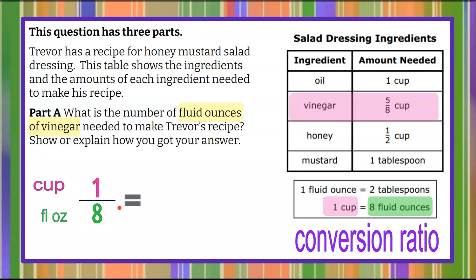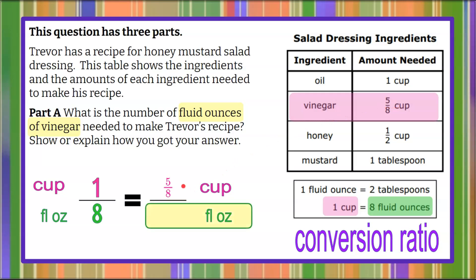We're going to write a proportion using this ratio, keeping it in the order cup to fluid ounces. Going back to our recipe, we know that we have five-eighths of a cup and want to know how much that is in fluid ounces. We're going to use this ratio to create an equivalent ratio, which means we're forming a proportion.